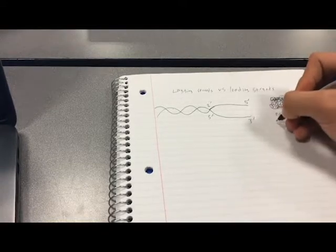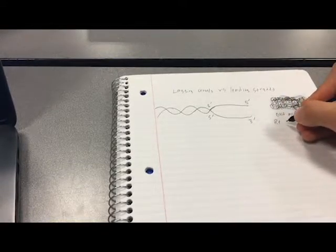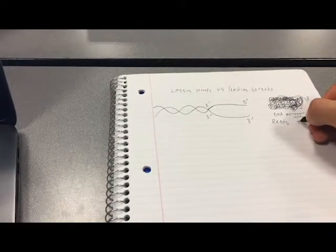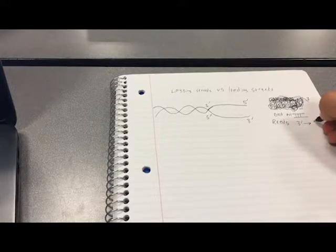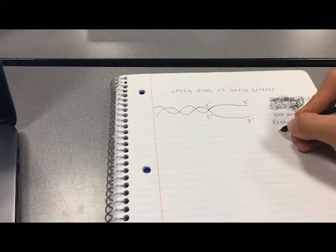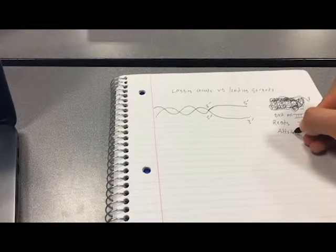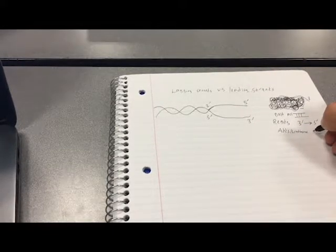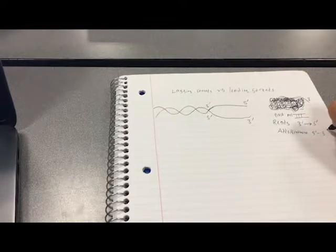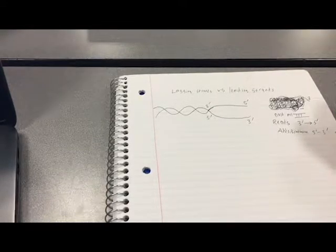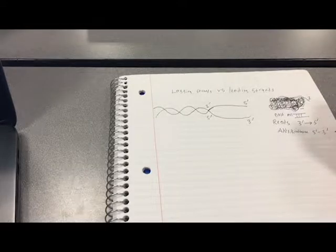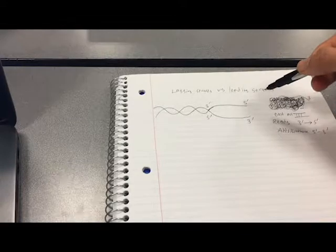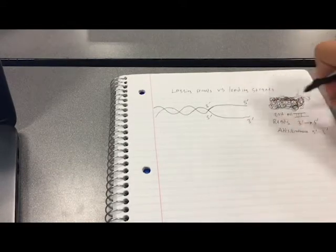So the way I like to remember this is I know DNA polymerase 3 reads from 3 prime to 5 prime, and I'll explain this in a second, and it adds or synthesizes the new strand of DNA from 5 prime to 3 prime. We know that we always need to add to the 3 prime OH, right? That's given.